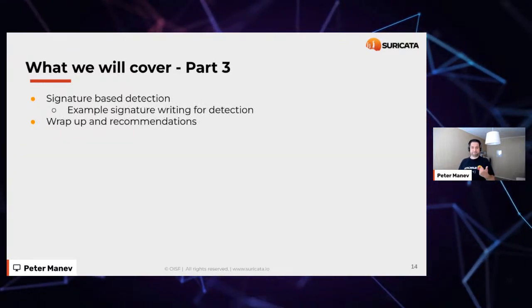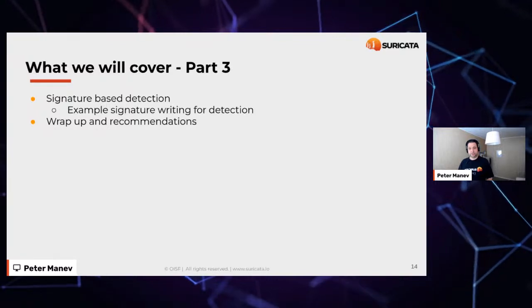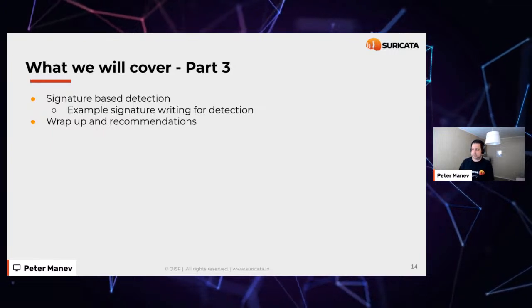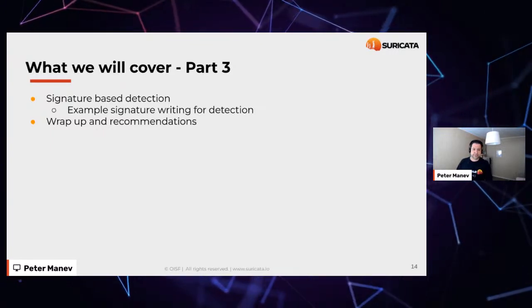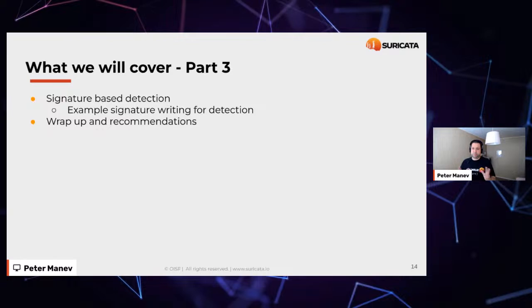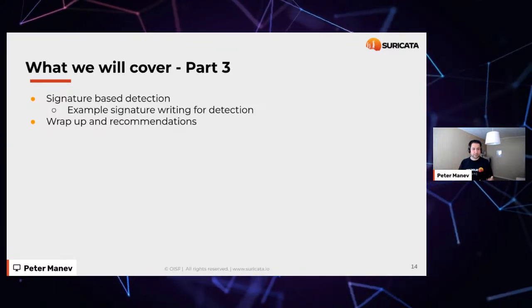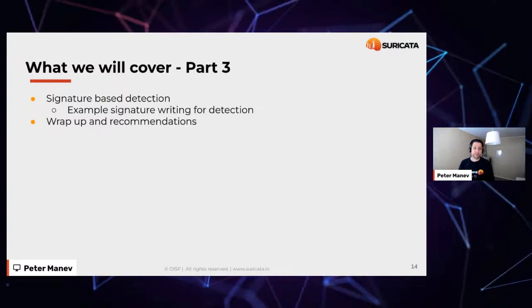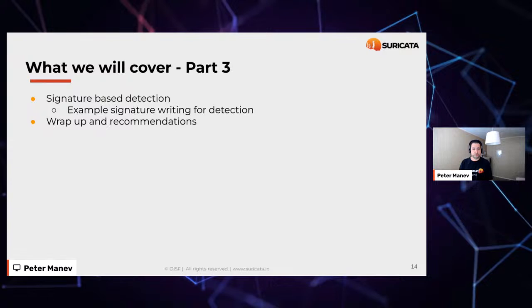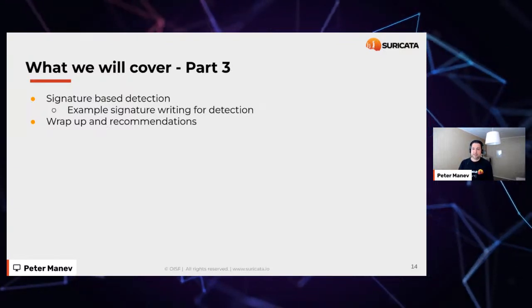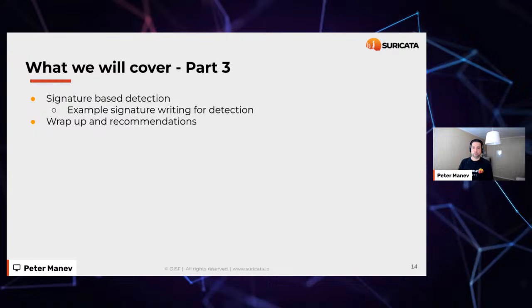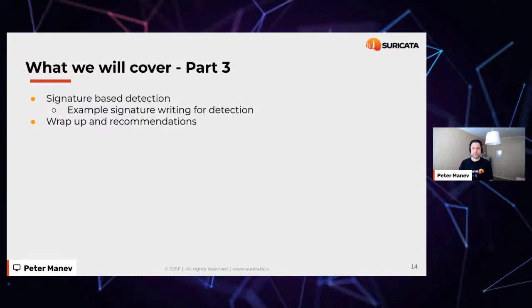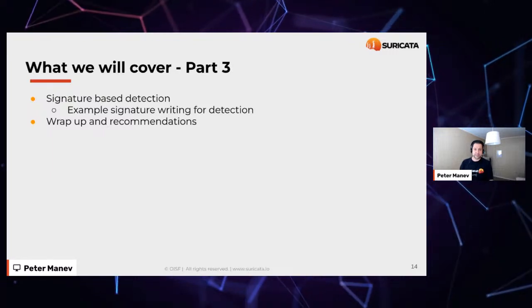Part three will use the latest Suricata to do a couple of example signature writing specifically for lateral-based detection, a wrap-up, and recommendations. These three-part series are aimed at exposing the wealth of data that Suricata can produce and how we can utilize that to the best possible extent.